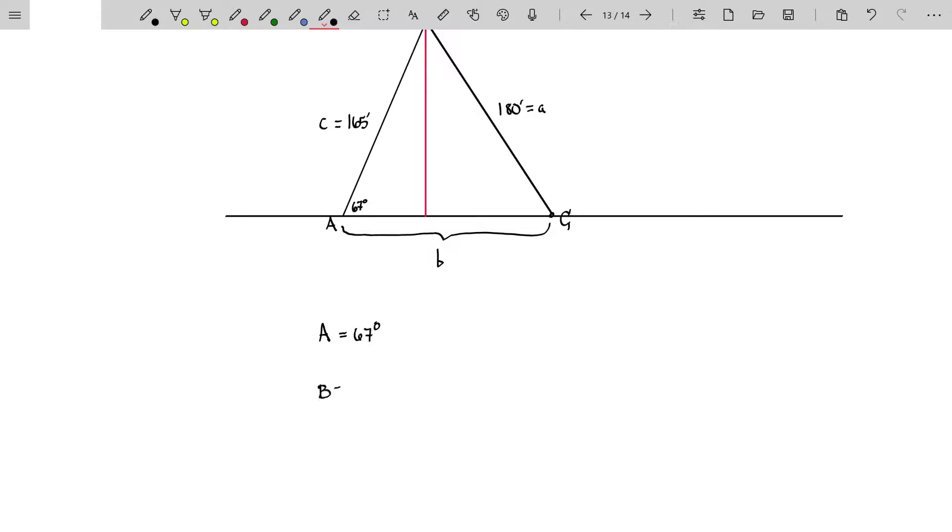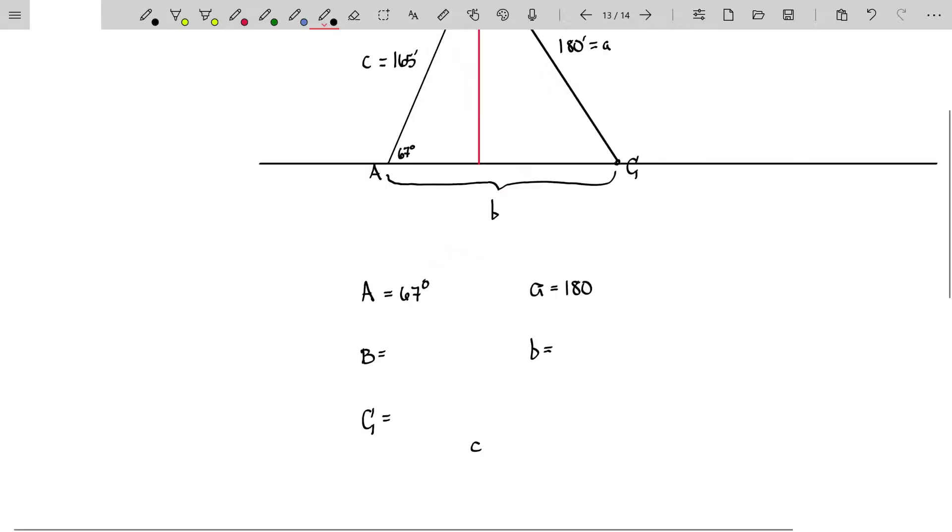Just fill out a table. Angle A is equal to 67 degrees. Angle B, we don't know. Angle C, we don't know. Side length A is 180. Now that we have a full row there, we know we can use law of sines. Side B is what we want. Side C is 165, and those are in feet. And you can see there's a little work here. We're going to use this full row to help us find this angle.